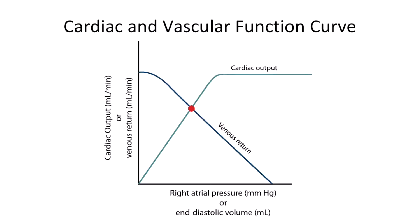Moving on to cardiac and vascular function curves. This is figure 2.9 from your text, which shows a normal cardiac and vascular function curve. This figure can be very confusing because it's an image of two graphs overlapped on top of each other. To make things more confusing, there are multiple variables on each axis. The x-axis has right atrial pressure or end diastolic volume, and the y-axis has cardiac output or venous return.